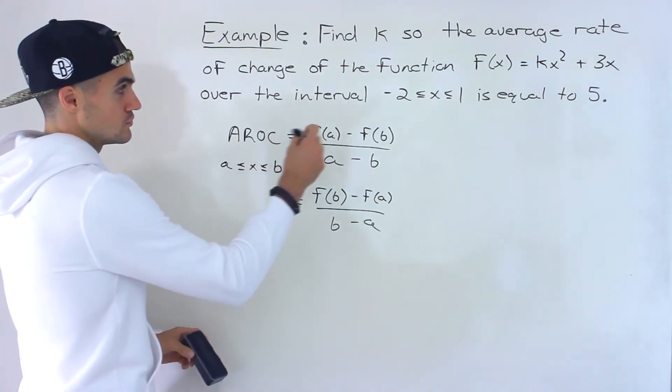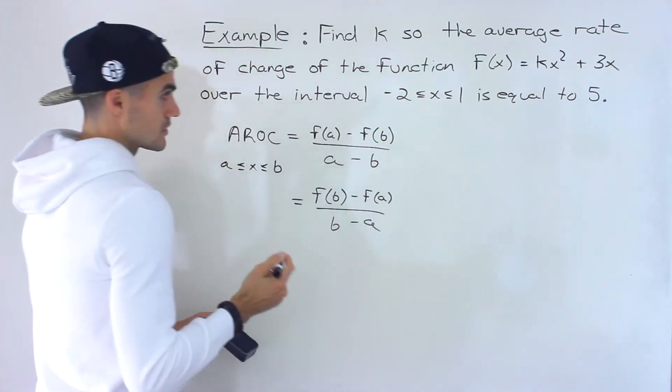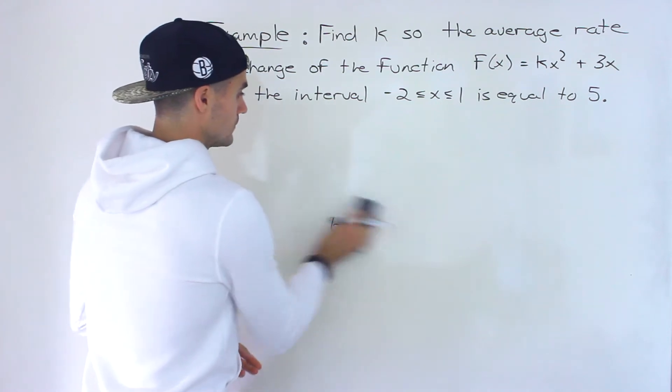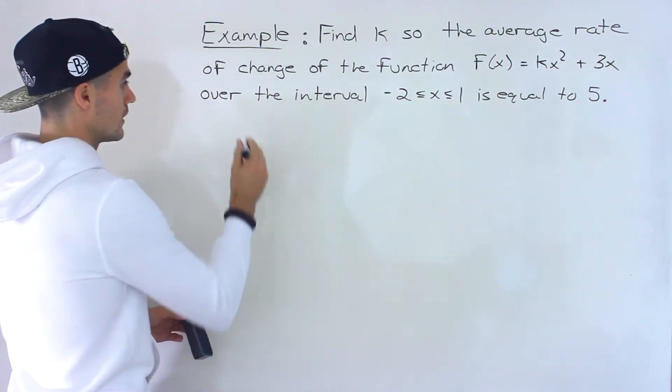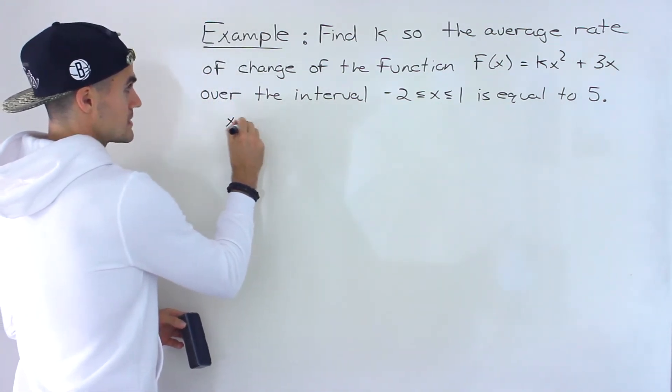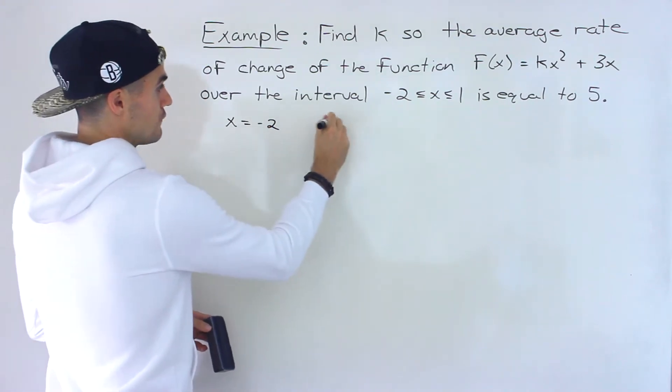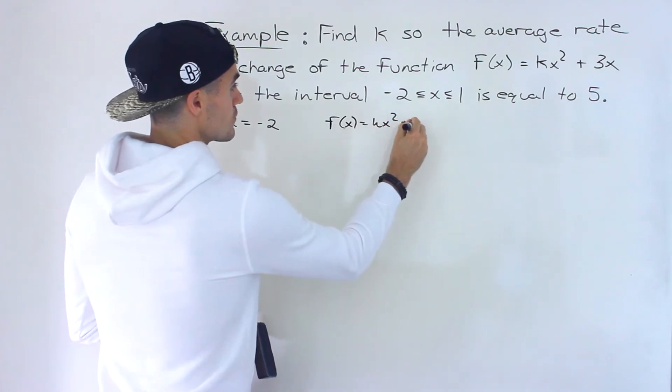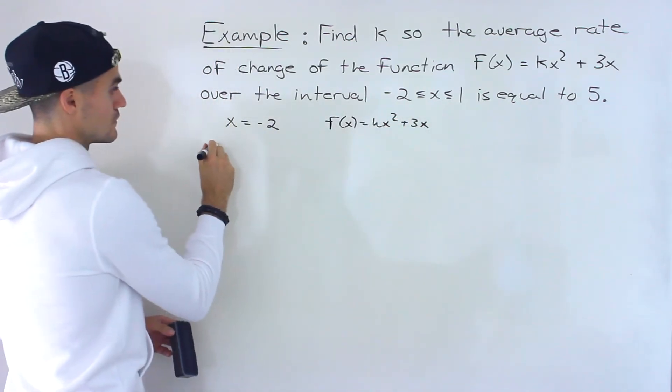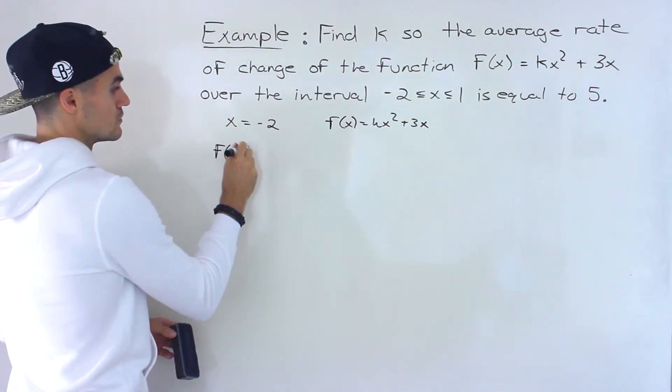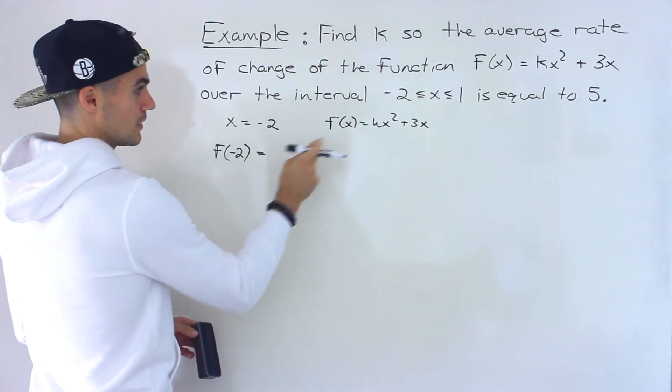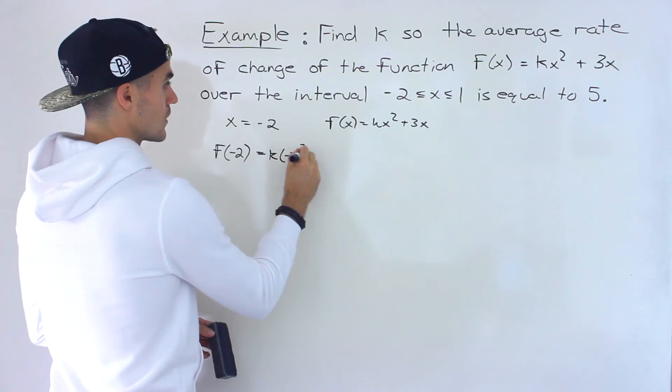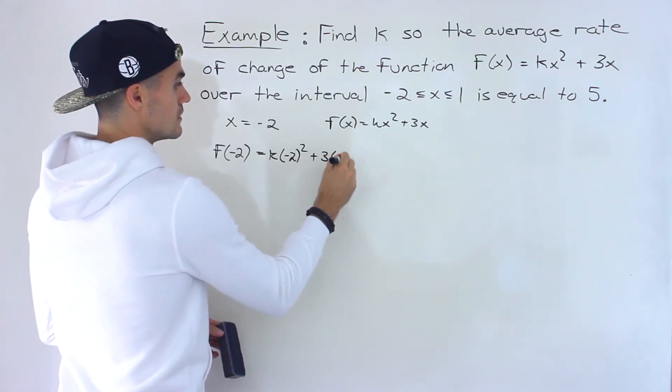So the two x values that we are dealing with is negative 2 and 1. Before writing out the formula, notice when x equals negative 2, if f(x) equals kx squared plus 3x, what's f(negative 2) going to be? If we plug in negative 2 for the x values, we'll have negative 2 squared plus 3 times negative 2.